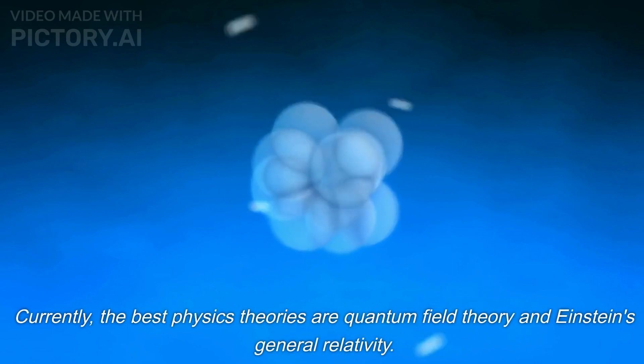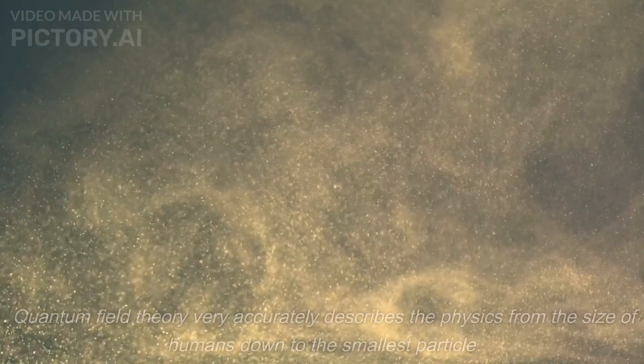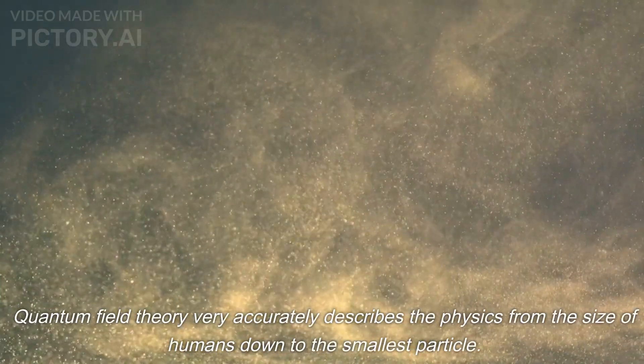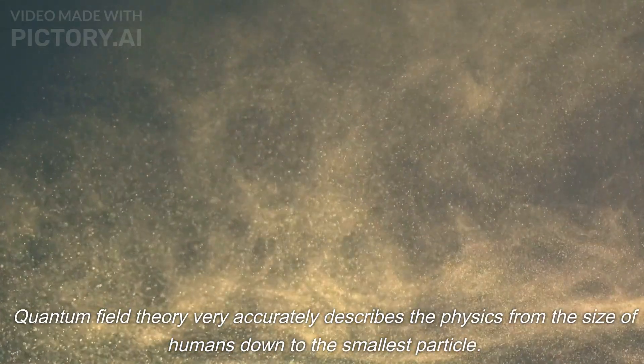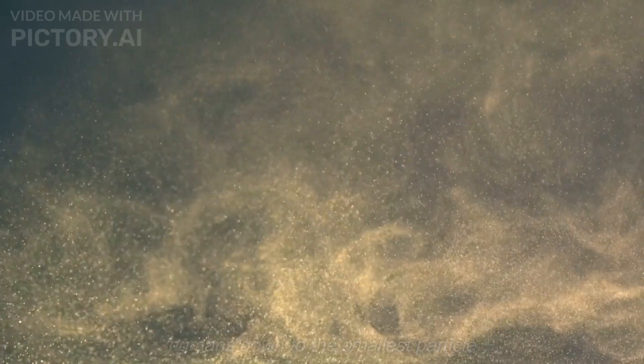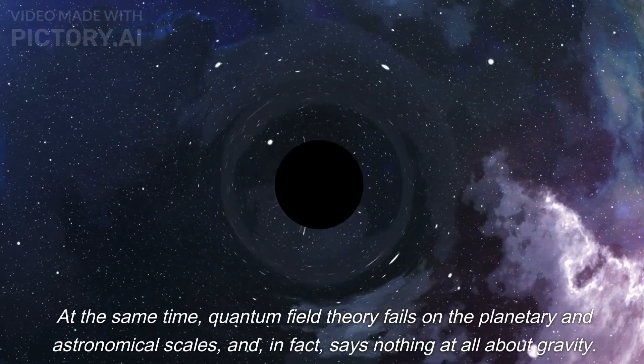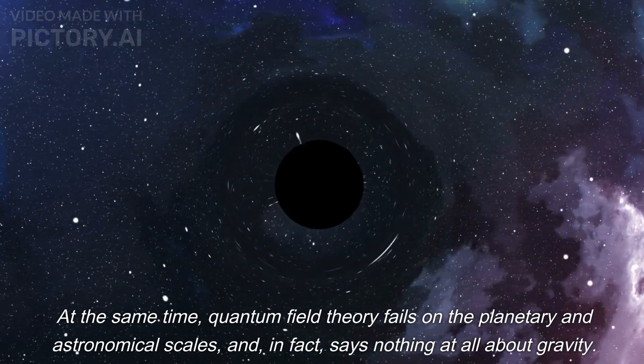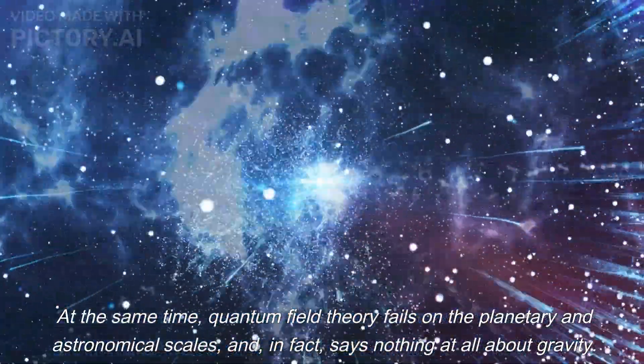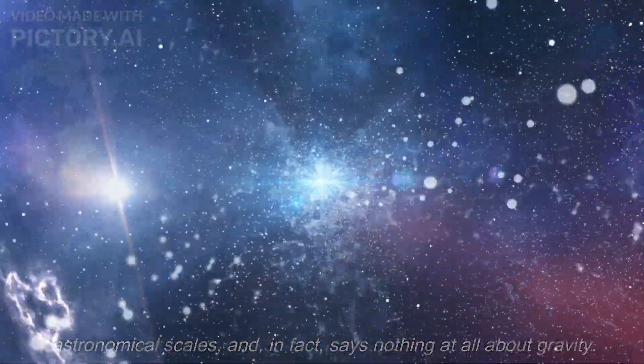Currently, the best physics theories are quantum field theory and Einstein's general relativity. Quantum field theory very accurately describes the physics from the size of humans down to the smallest particle. At the same time, quantum field theory fails on the planetary and astronomical scales, and, in fact, says nothing at all about gravity.